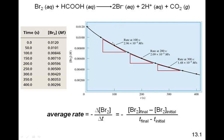We pick two points on the line. We call the later point the final concentration and the earlier one the initial concentration. For example, using 300 seconds as final and 100 seconds as initial, we plug in the concentrations — the final is smaller than the initial, so the result is negative. We take the two concentrations, subtract, divide by the difference in times, and get the average rate for this reaction.